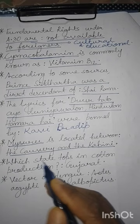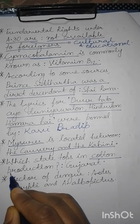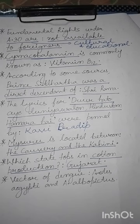Which state tops in cotton production? कपास के उत्पादन में अग्रणी राज्य क्या है? उत्तर है — गुजरात। Gujarat tops in cotton production.